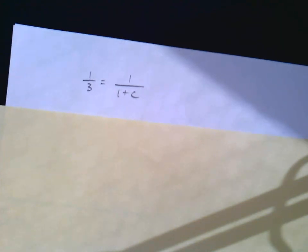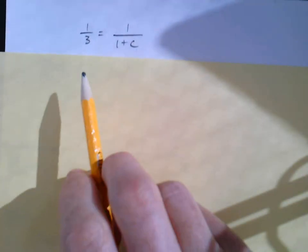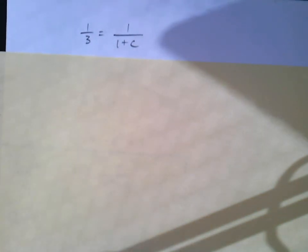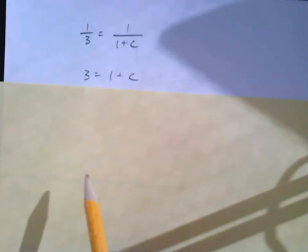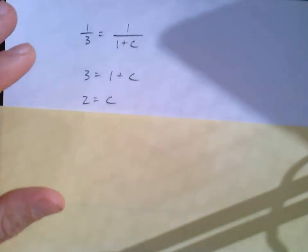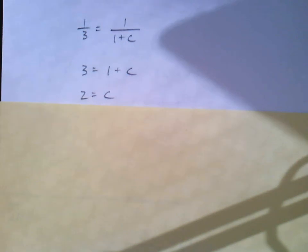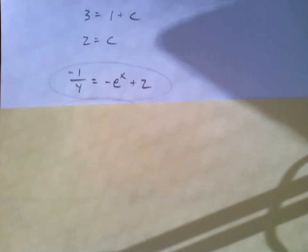E to the zero equals one. Maybe if you take the reciprocals of both sides, you get this and C will equal two. Now we're not done - we want to take that value of C and plug it back in.